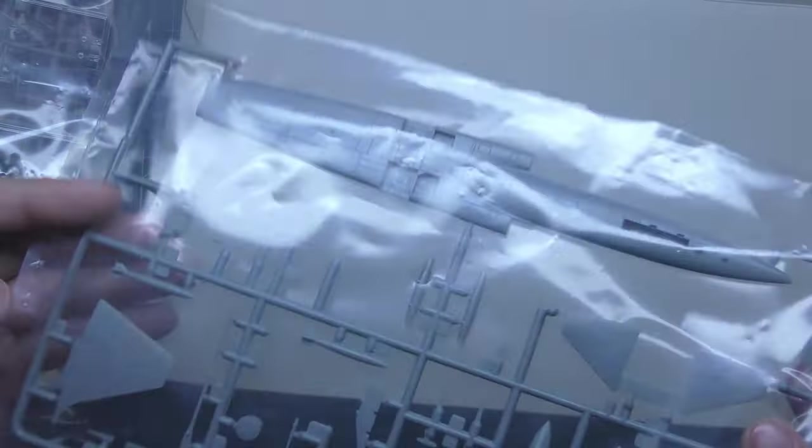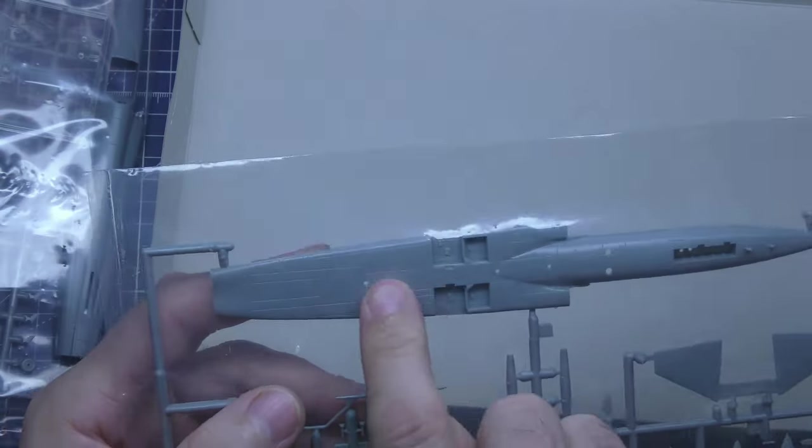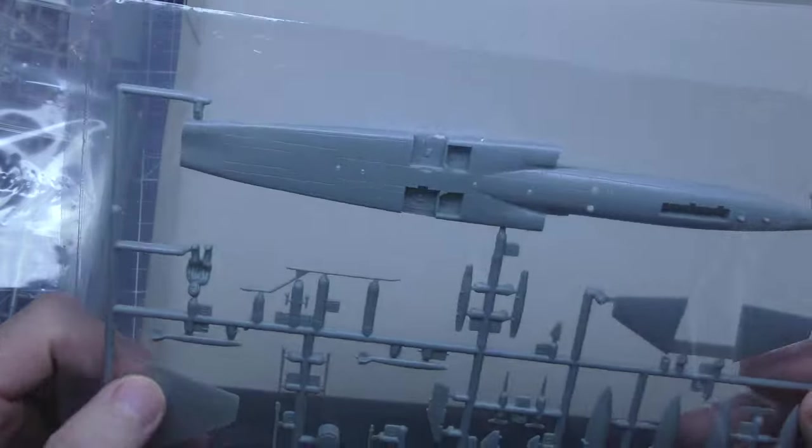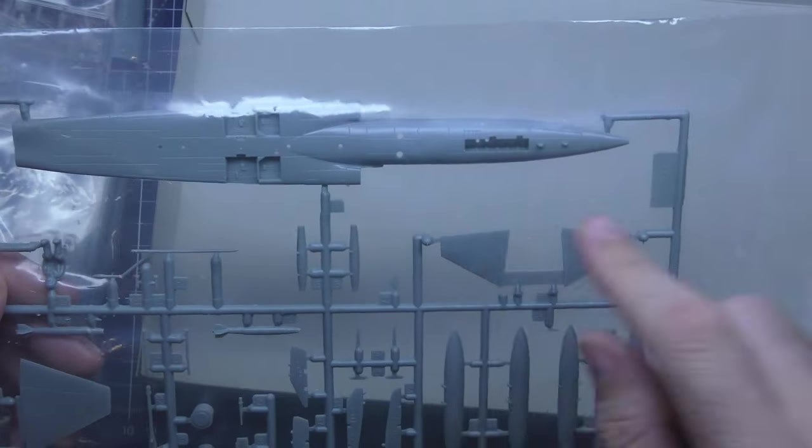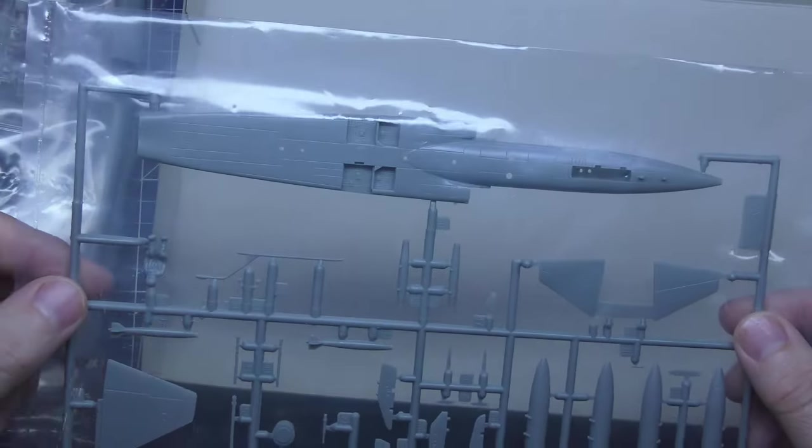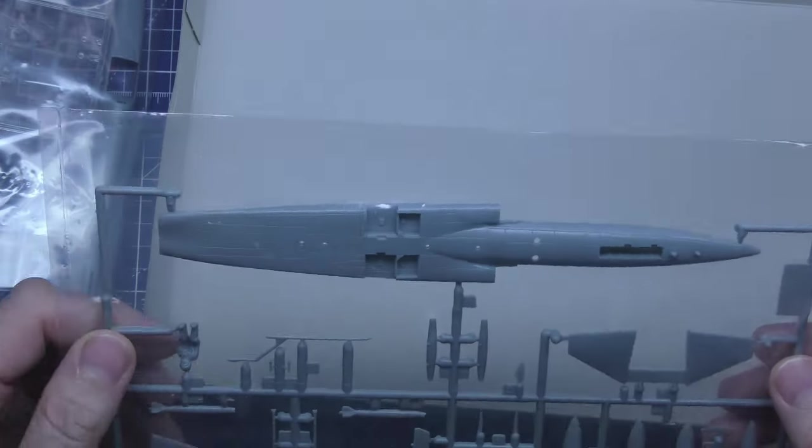There is an instrument panel decal. Quick one on these—the panel lines are all sunken, so we've not got raised panel lines. It is a 1999 kit, so I would have been disappointed if they were raised.